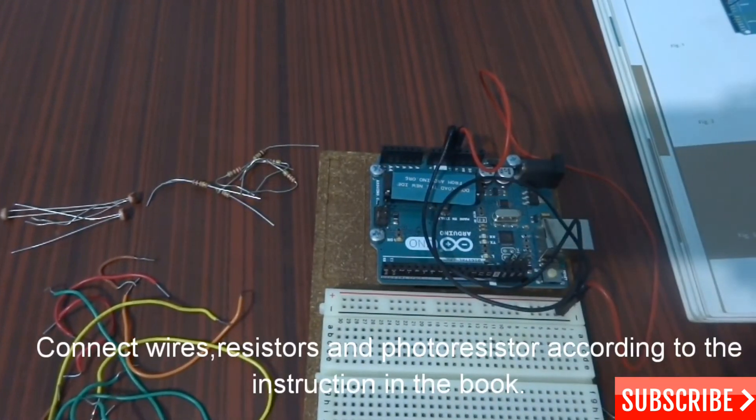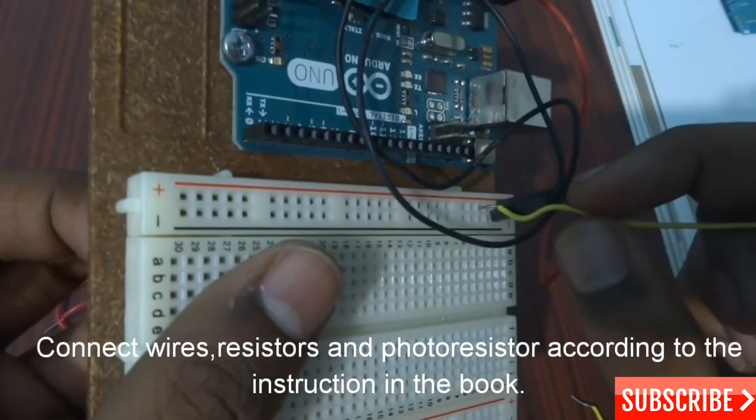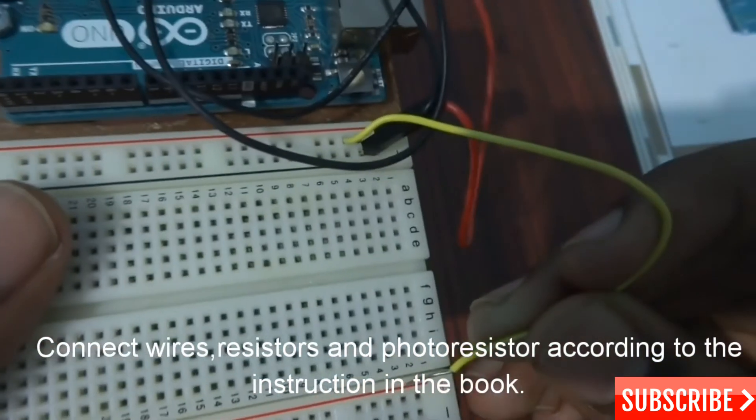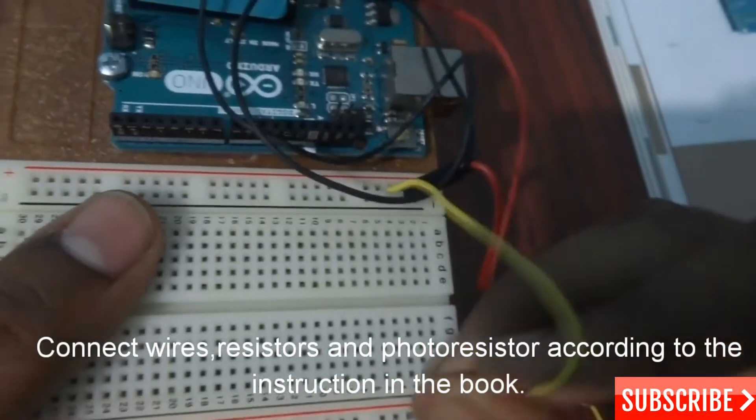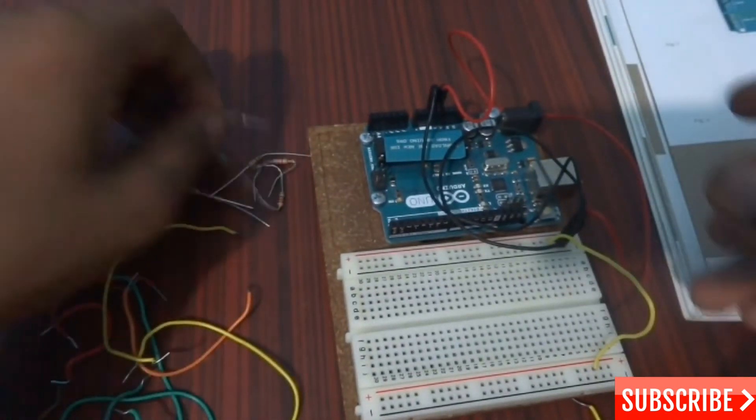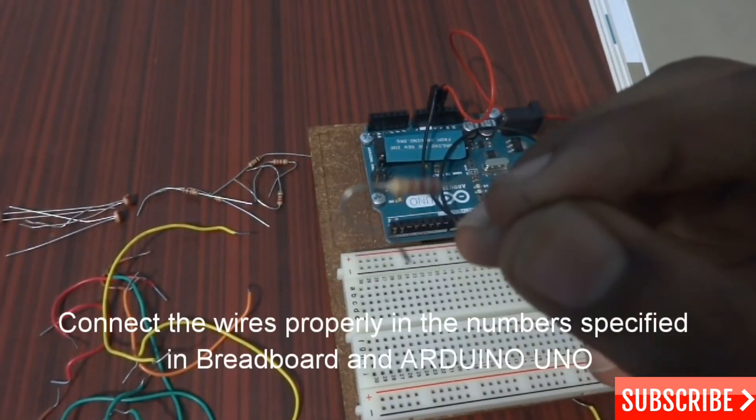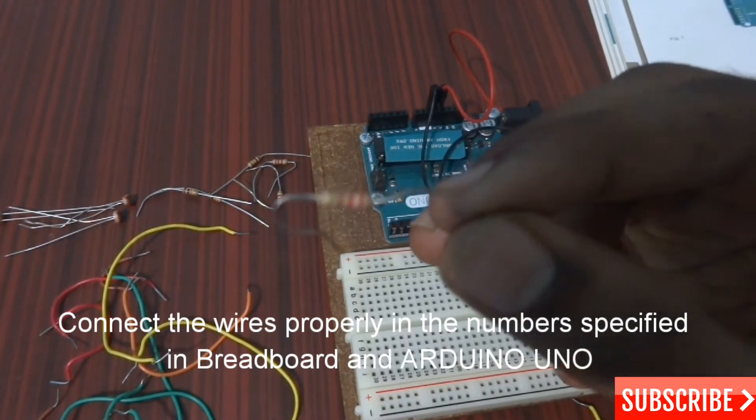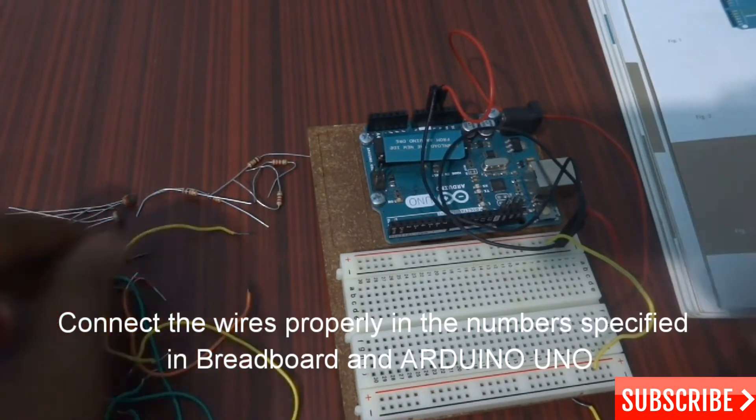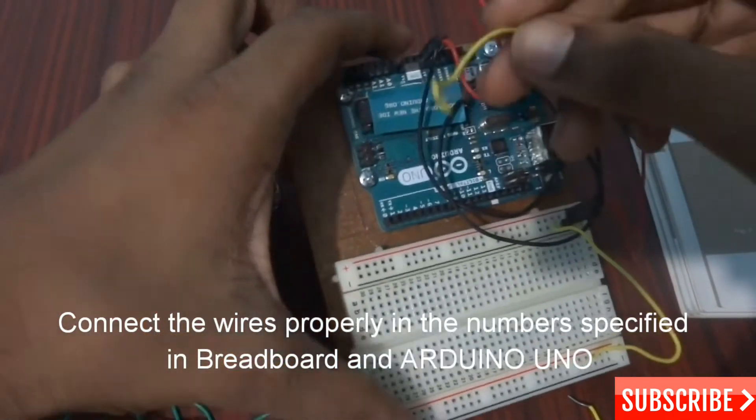Yellow wire and connect it from over here. I'm going to take this resistor, it's the 220 ohm resistor. First I'm thinking of connecting the wires, then I'll connect the resistors.